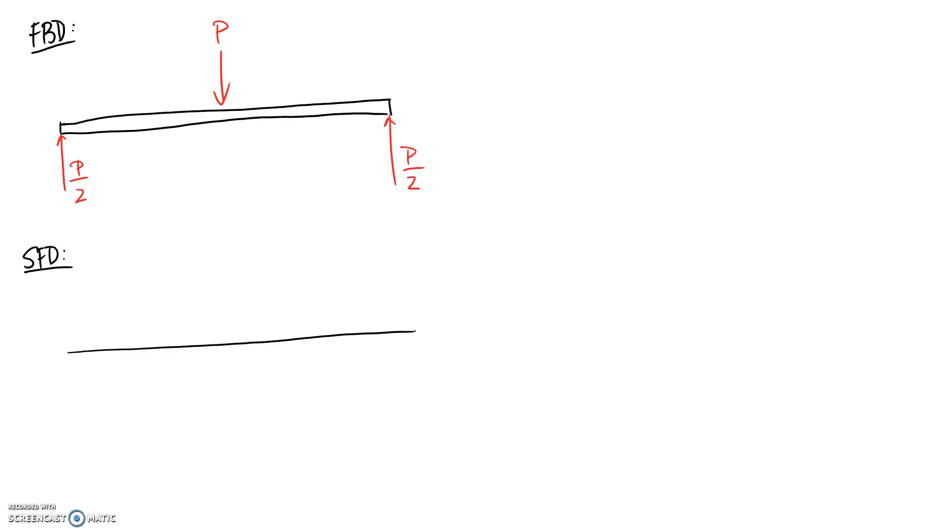Following the forces as we move across the beam, at the beginning we're forced up P on 2. Nothing happens through this section, so it's going to remain flat till we get to the center where we're forced down a value of P, so P on 2 minus P takes us to negative P on 2.